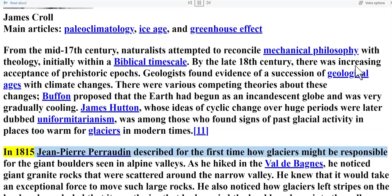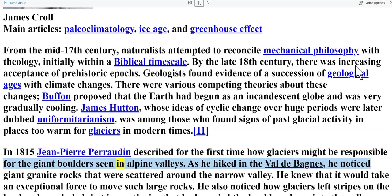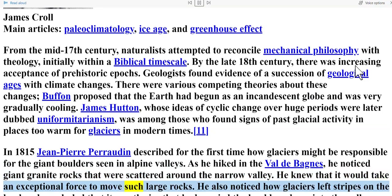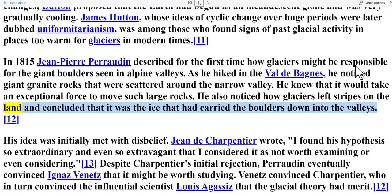In 1815, Jean-Pierre Perraudin described for the first time how glaciers might be responsible for the giant boulders seen in Alpine valleys. As he hiked in the Val de Bagnes, he noticed giant granite rocks scattered around the narrow valley. He knew that it would take an exceptional force to move such large rocks. He also noticed how glaciers left stripes on the land, and concluded that it was the ice that had carried the boulders down into the valleys.